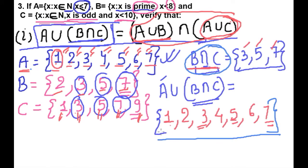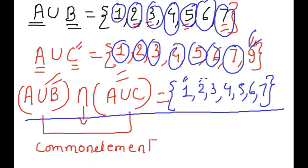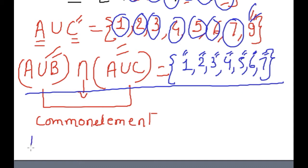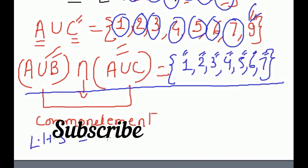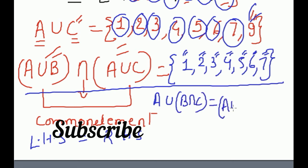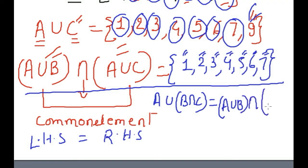LHS = {1, 2, 3, 4, 5, 6, 7} and RHS = {1, 2, 3, 4, 5, 6, 7}. They are equal. So we can say LHS equals RHS, meaning A ∪ (B ∩ C) = (A ∪ B) ∩ (A ∪ C). Hence proved.